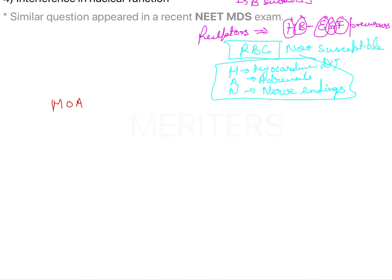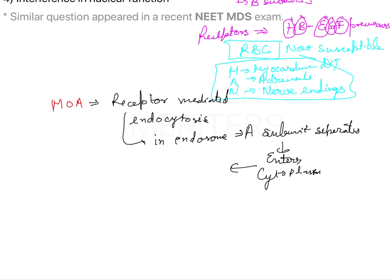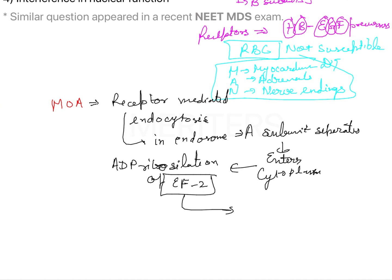The mechanism of action begins with receptor-mediated endocytosis. Inside the endosomes, the A subunit separates and enters the cytoplasm. There, it causes ADP ribosylation of elongation factor 2 (EF2).